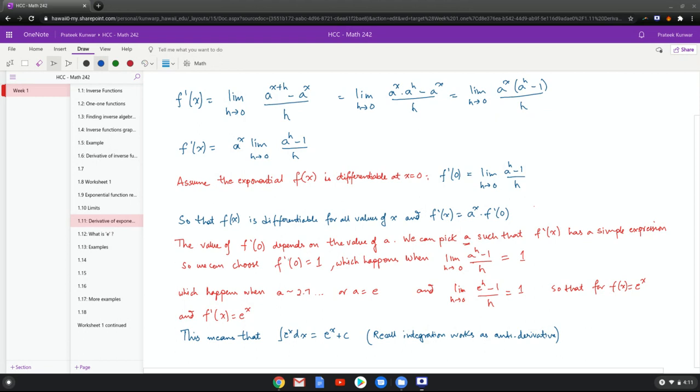The simplest value that we can pick for a is so that f prime zero becomes one, and that happens when this limit h goes to zero, a to the h minus one over h becomes equal to one, which happens when a is approximately two point seven or this number called e. And thus we have the limit h going to zero, e to the h minus one over h equals one. And for this function called e to the x, f prime becomes e to the x.